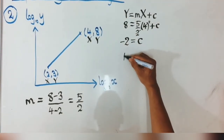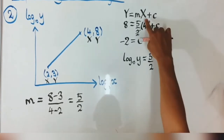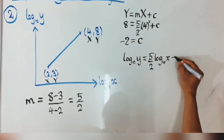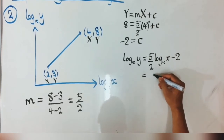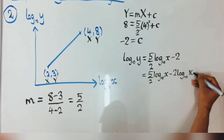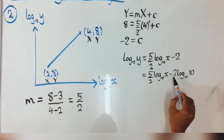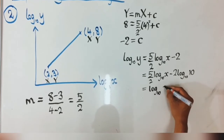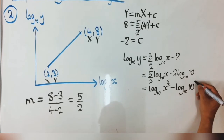Now substituting back: capital Y is log₁₀y, so we have log₁₀y equals (5/2) times log₁₀x plus (negative 2). For the constant negative 2, we give it a log: log₁₀(10) equals 1, so 2 equals log₁₀(10²) equals log₁₀(100). Using logarithm laws, the coefficient can be brought up as a power: (5/2) log₁₀x becomes log₁₀(x^(5/2)).